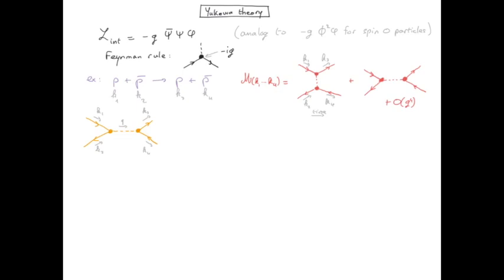So let's calculate the second diagram as an example. We labeled each line with their four momenta and we have two vertices. We don't account for the propagator of the external line but we have one internal line so we need to write its propagator.